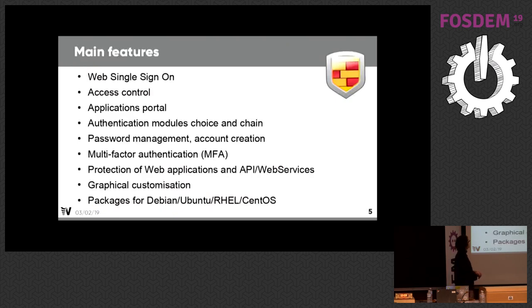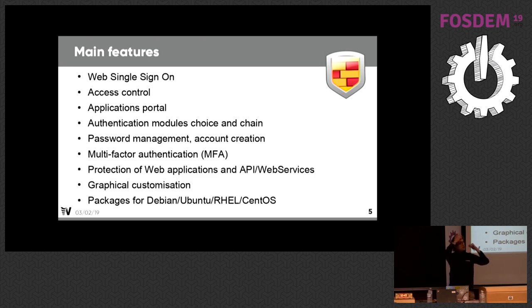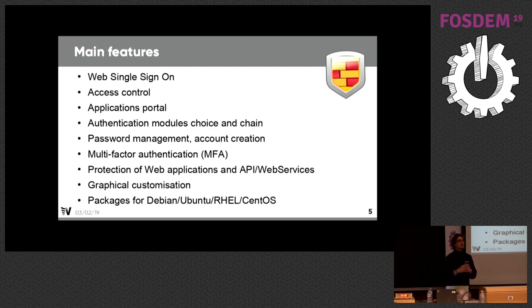So what are the main features? Of course, web single sign-on, but we also provide access control. It means you can configure in a centralized database which are the access rules to applications. So you can say this group of users can access the cloud, but this other group cannot and can access the intranet, etc. You can use any information about the users to control access. This also provides a portal in which you can see your applications, and of course you only see the applications you have access to. So users cannot click on applications they can't access.